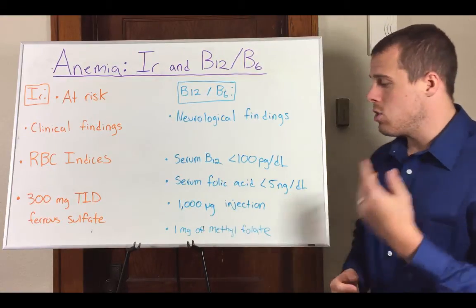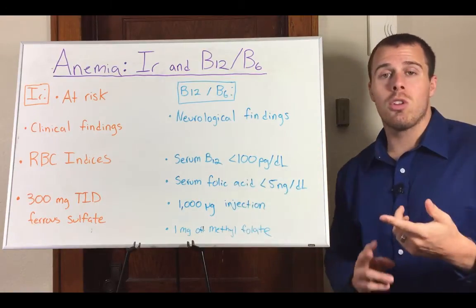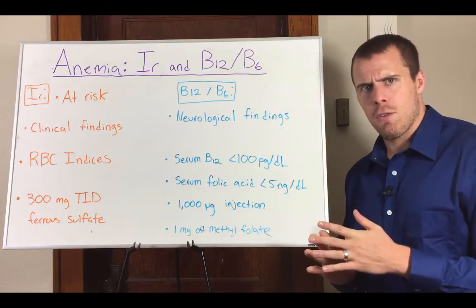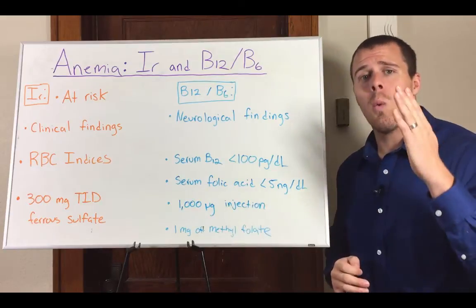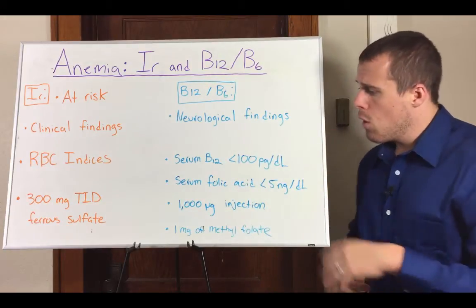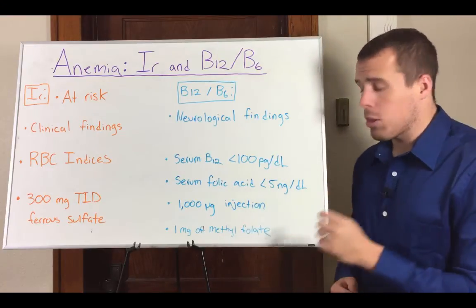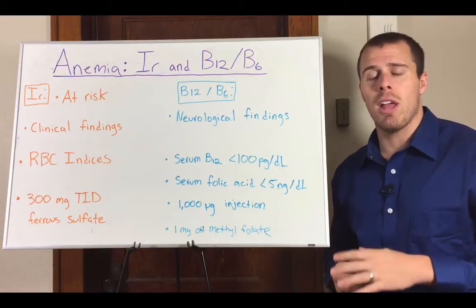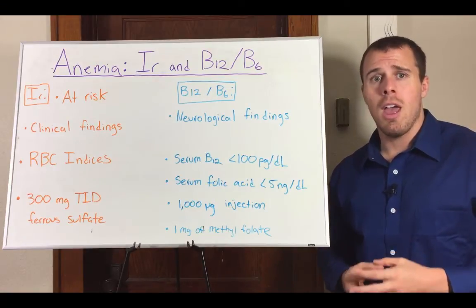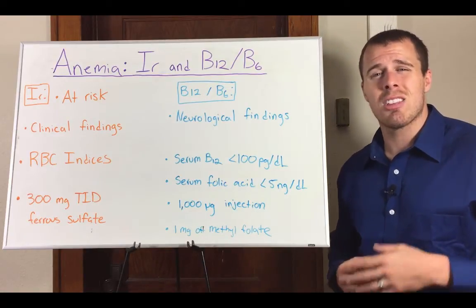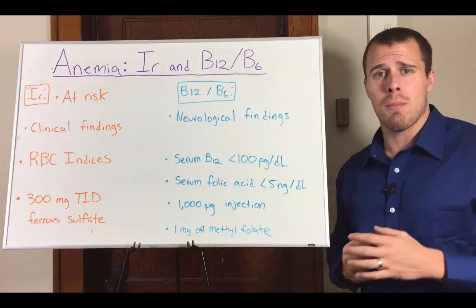For treatment of B12 anemia, we do 1000 microgram injections of B12 — once per day for the first week, then once a week for the next month, and then once per month after that. For B6 anemia, we do one milligram of methylfolate per day. Make sure to take methylfolate, which is the bioidentical form and better absorbed, not folic acid, which is the synthetic form and not absorbed as well.